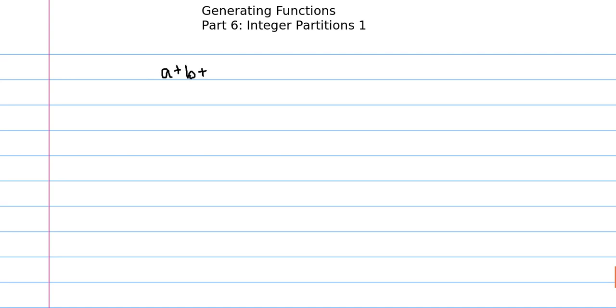In specific, we all know the classic example where we have a plus b plus c is equal to some integer d. Typically, we're trying to find non-negative integer solutions a, b, and c. And in competition math, we have our lovely friend stars and bars to help us, where we have two bars, one for each plus sign, and d stars.